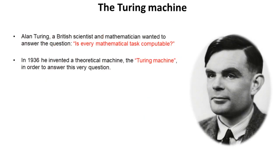Alan Turing was a British scientist and mathematician who wanted to answer the question is every mathematical task computable? In 1936 he invented a theoretical machine, the Turing machine, in order to answer this very question.